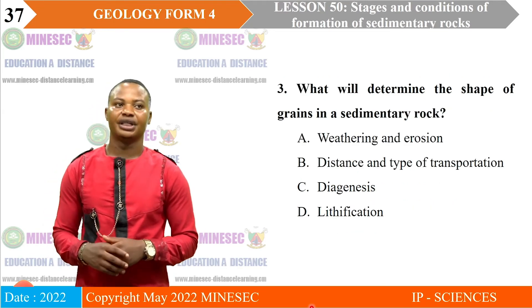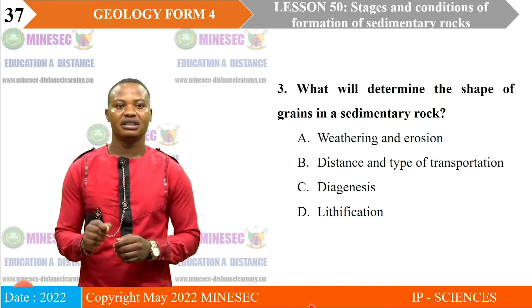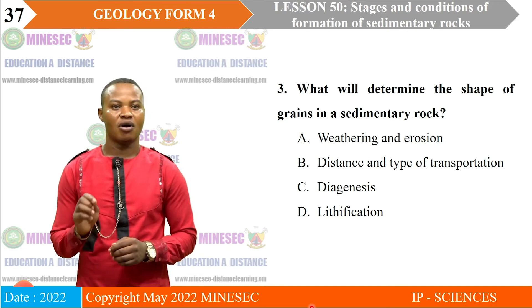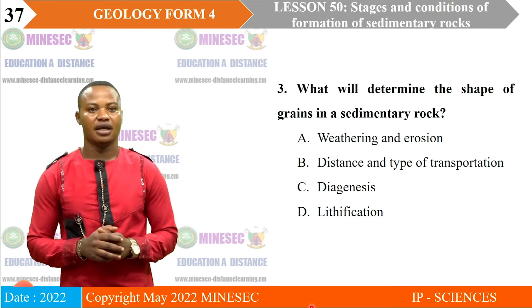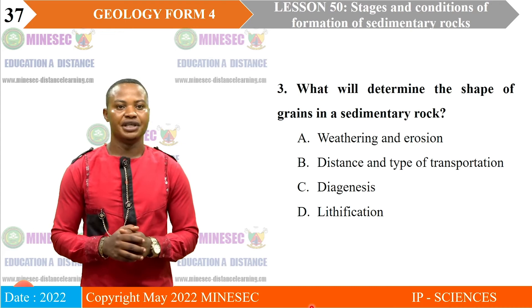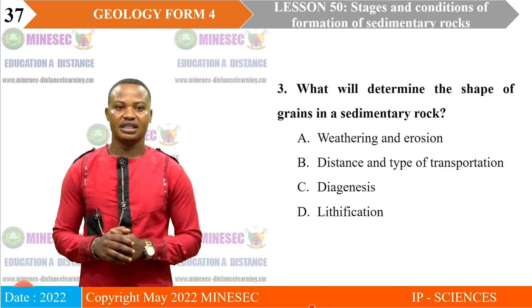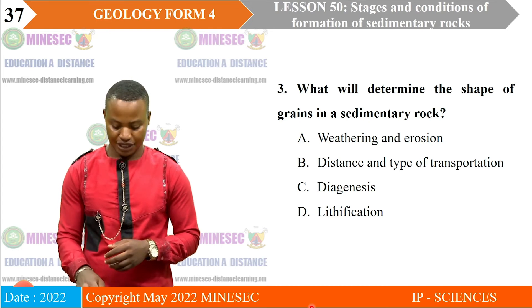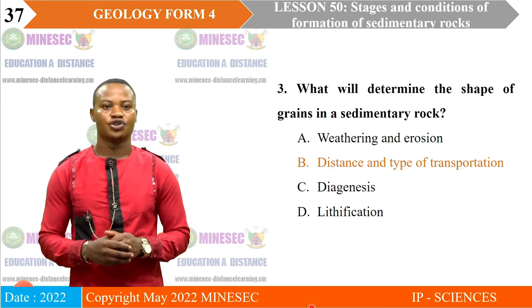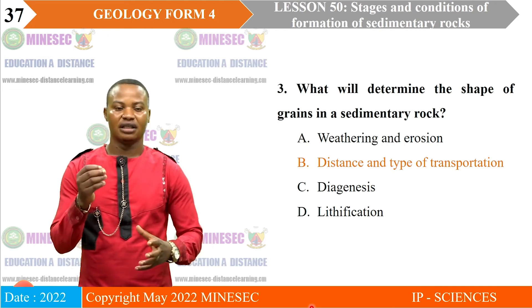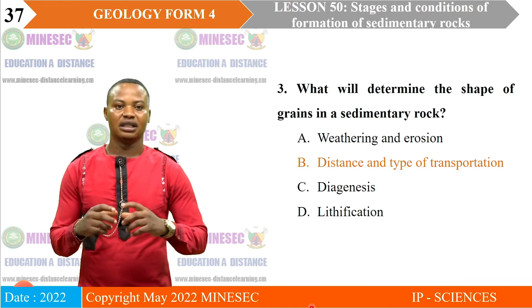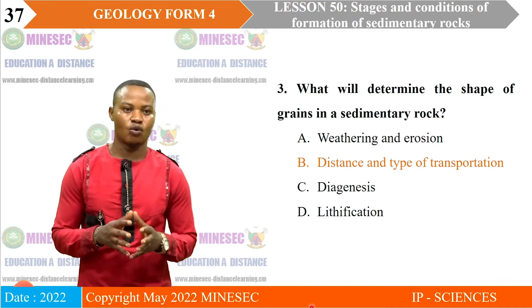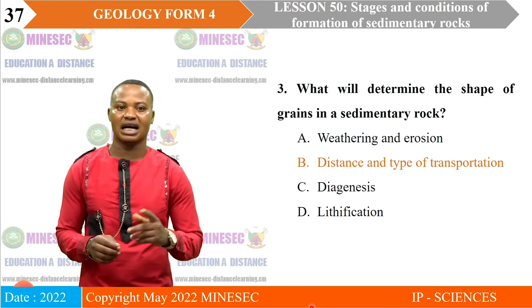Exercise three: what will determine the shape of grains in a sedimentary rock? A: weathering and erosion. B: distance and type of transportation. C: diagenesis and lithification. The correct answer is B — distance and type of transportation. The longer the distance, the finer and more rounded the grains. Sediments transported over short distances are coarse and angular, while those transported over long distances are fine and rounded.